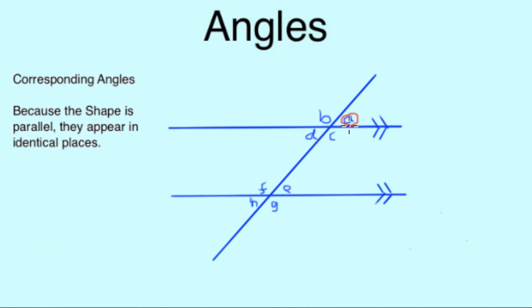Corresponding angles are also equal. We can see this because the intersecting line crosses these identical lines at the same angle, which means they will also be the same angle.